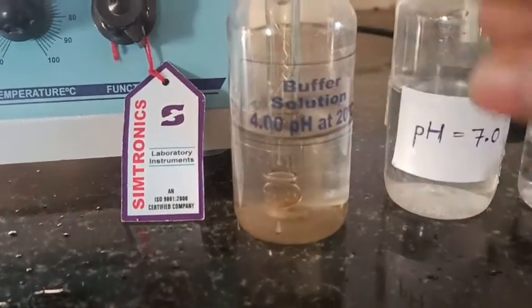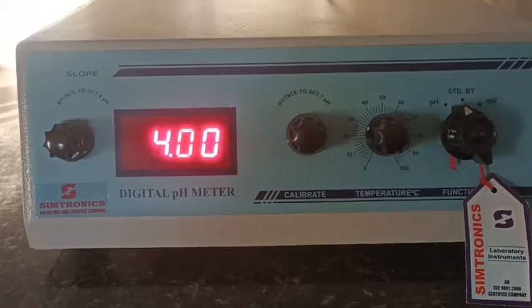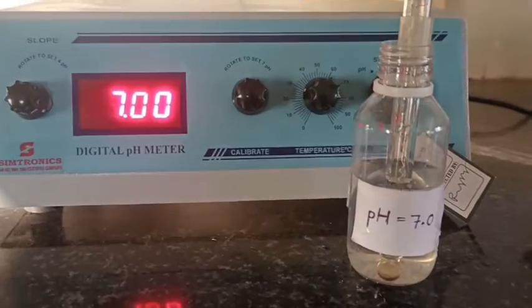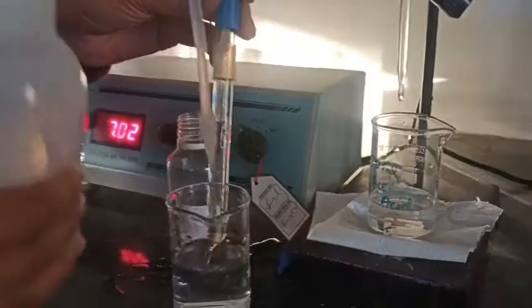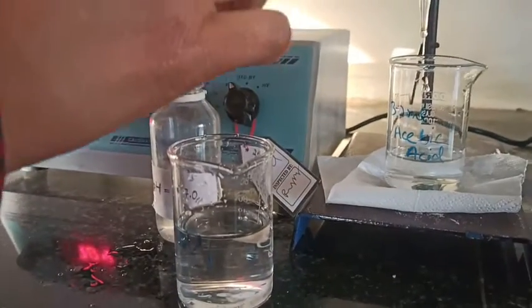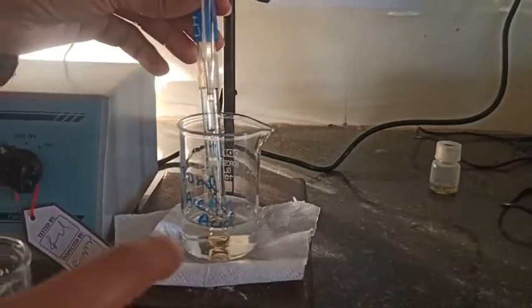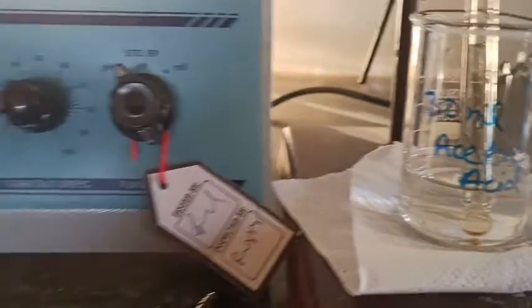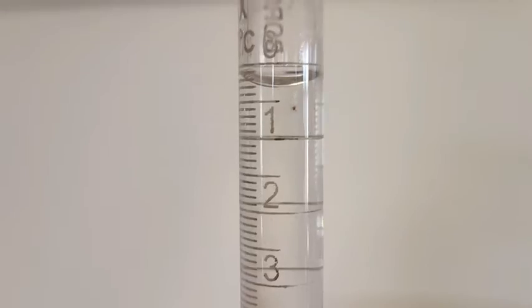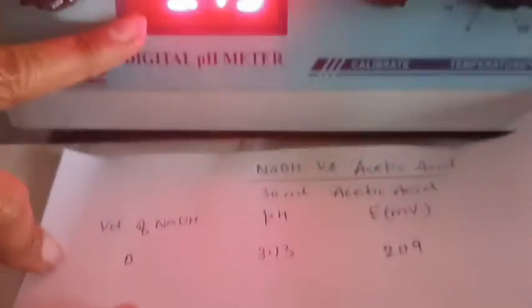Now I'm placing the electrode in pH buffer solution 4 just to check the calibration. After that I wash it thoroughly with distilled water and keep the electrode in 30 ml of acetic acid solution. The initial pH reading for this 30 ml of acetic acid is 3.13.